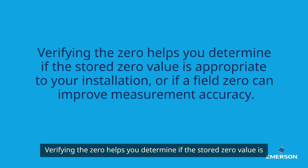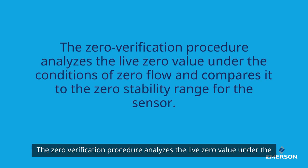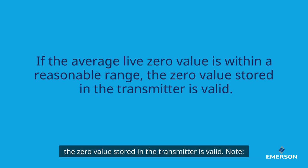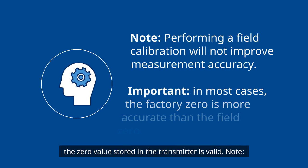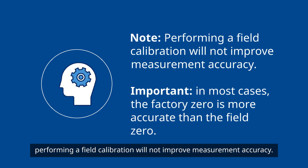Verifying the zero helps you determine if the stored zero value is appropriate to your installation, or if a field zero can improve measurement accuracy. The zero verification procedure analyzes the live zero value under the conditions of zero flow and compares it to the zero stability range for the sensor. If the average live zero value is within a reasonable range, the zero value stored in the transmitter is valid.